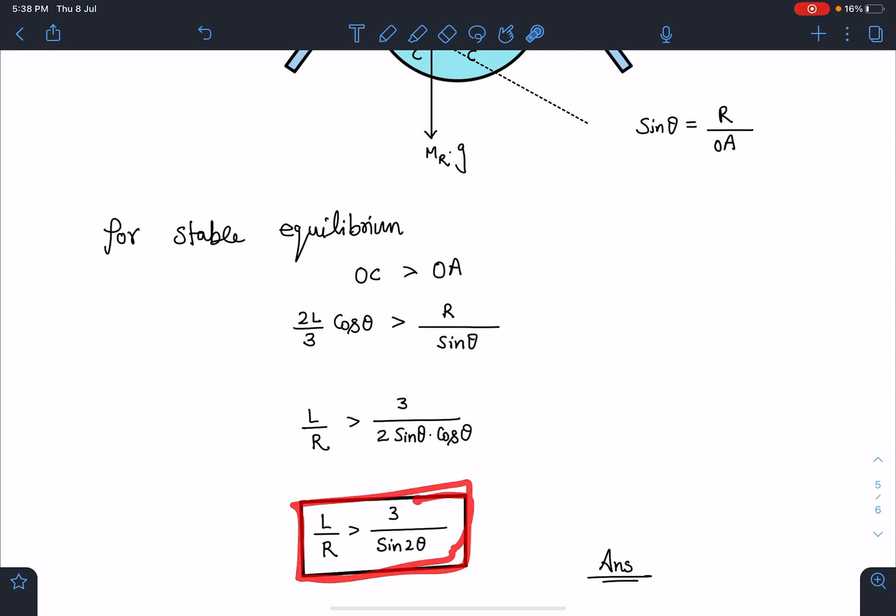So minimum value of L by R is 3 by sin 2 theta. This is going to be the final answer for this problem.